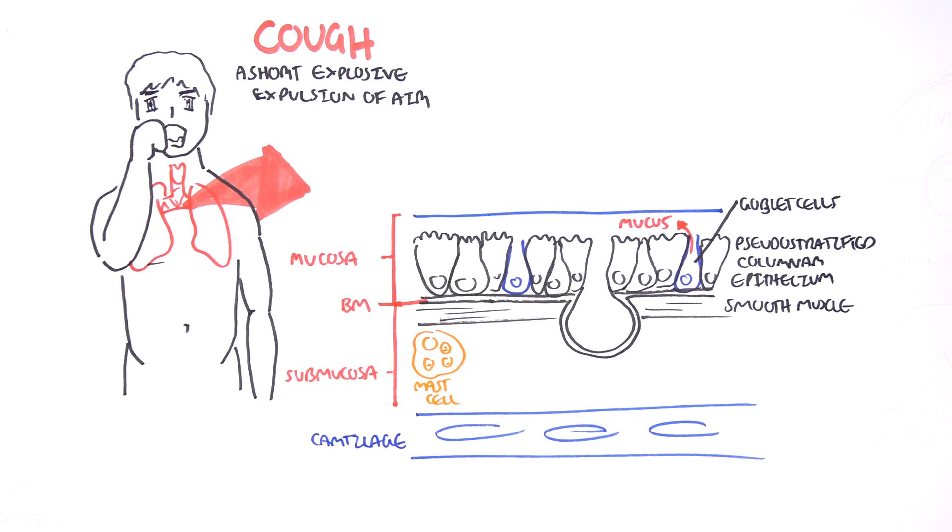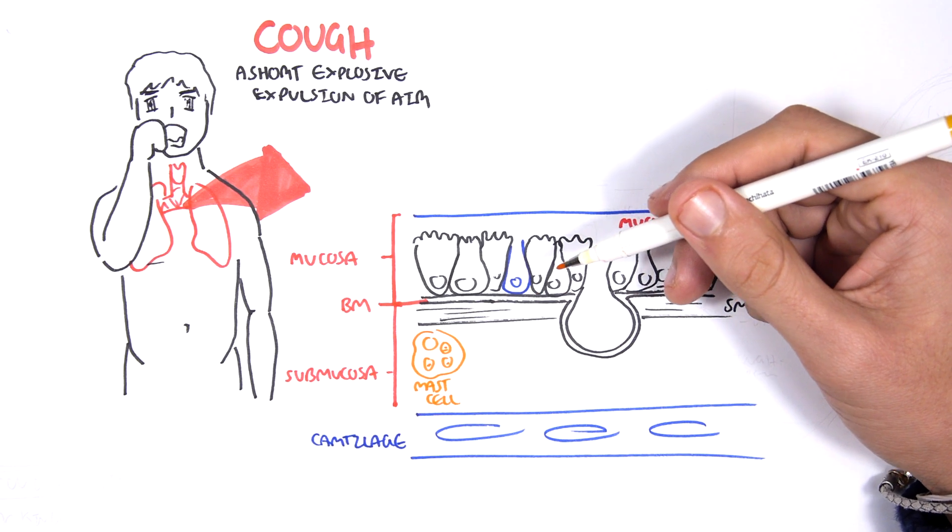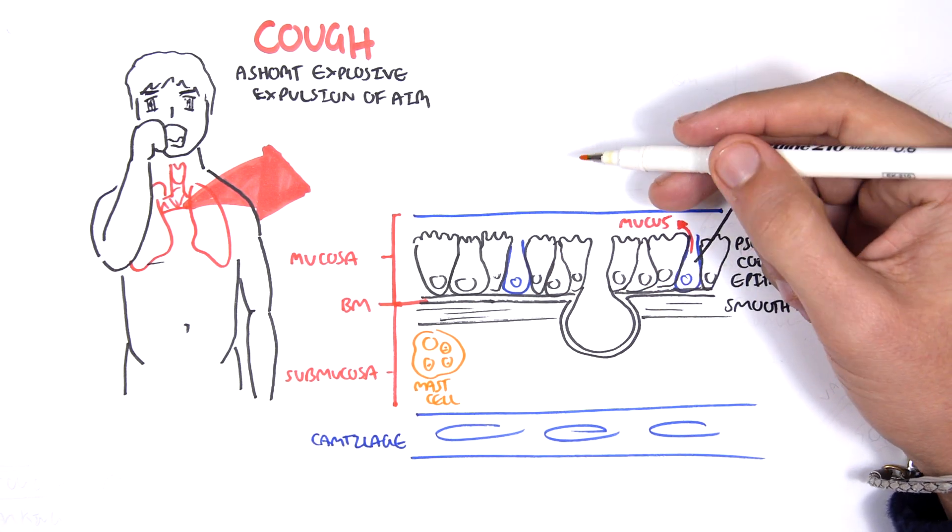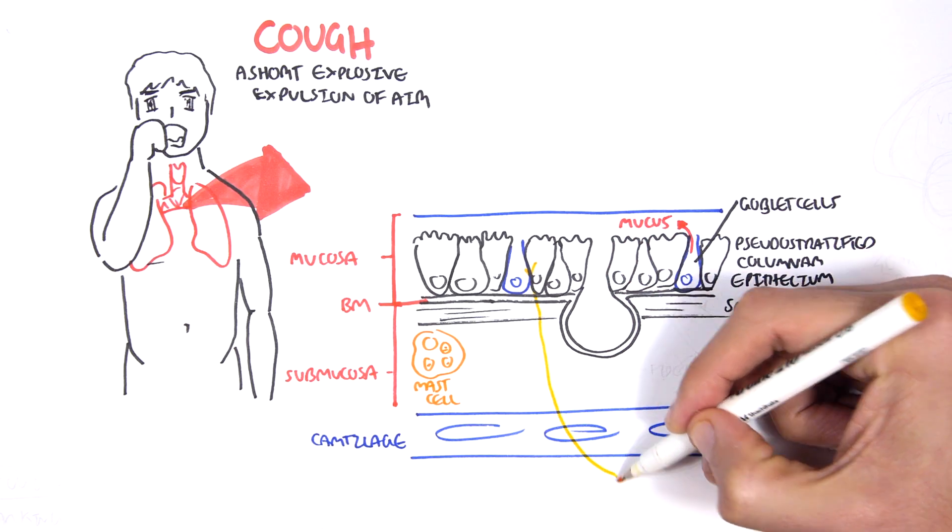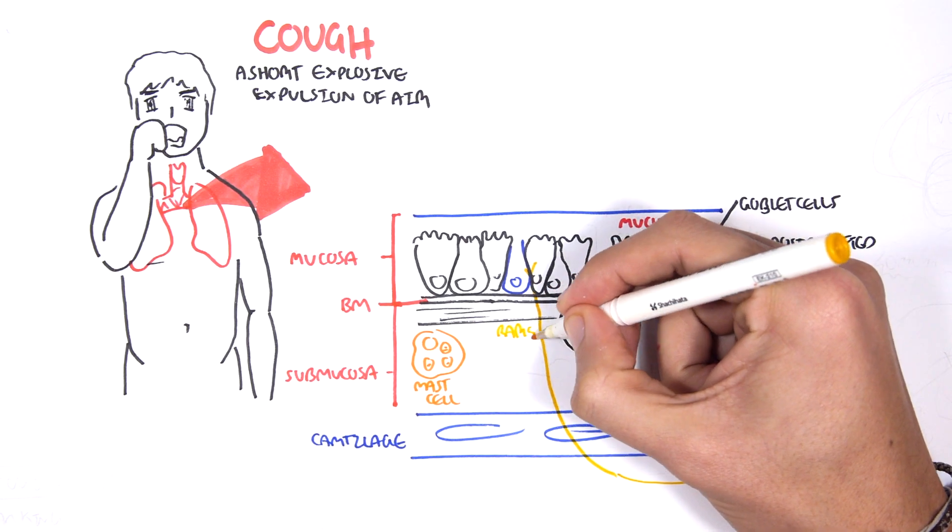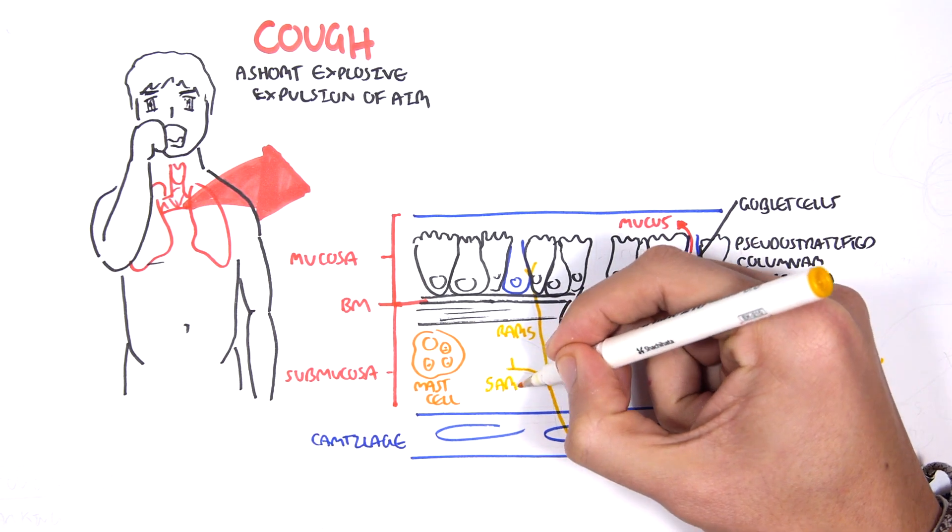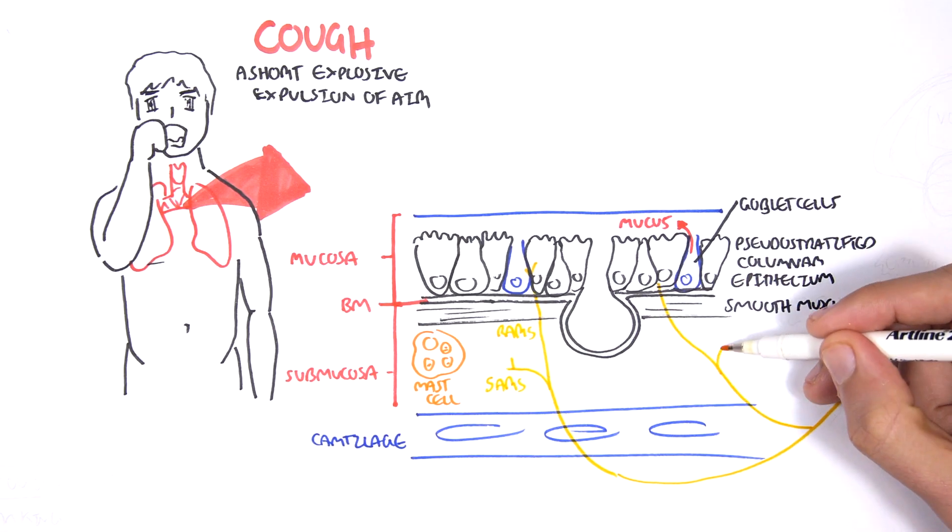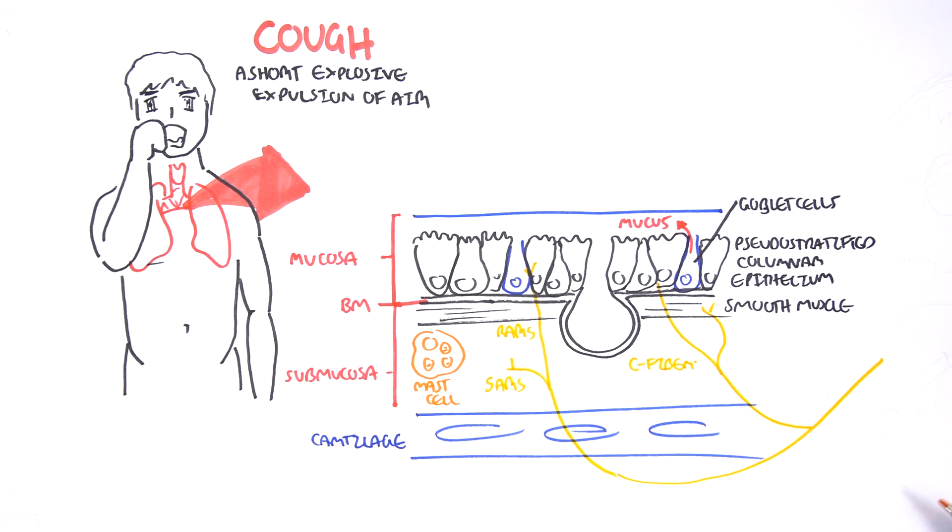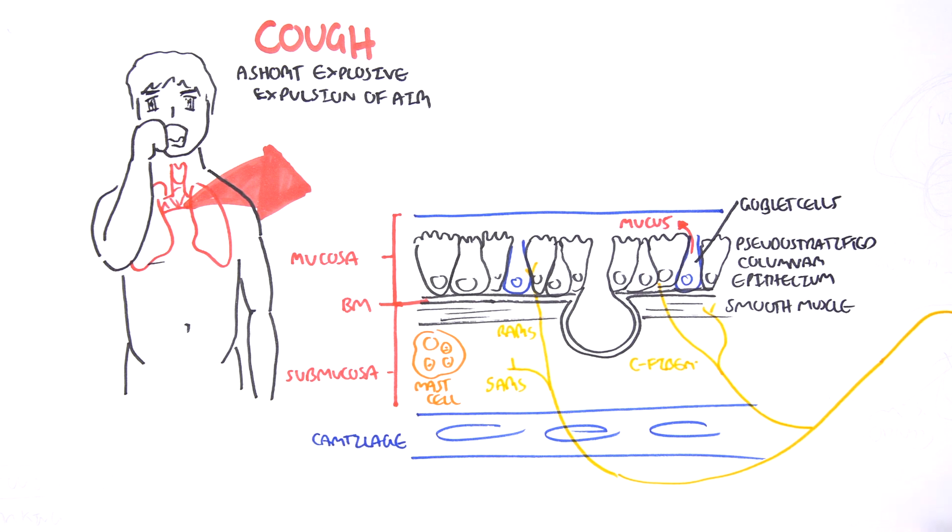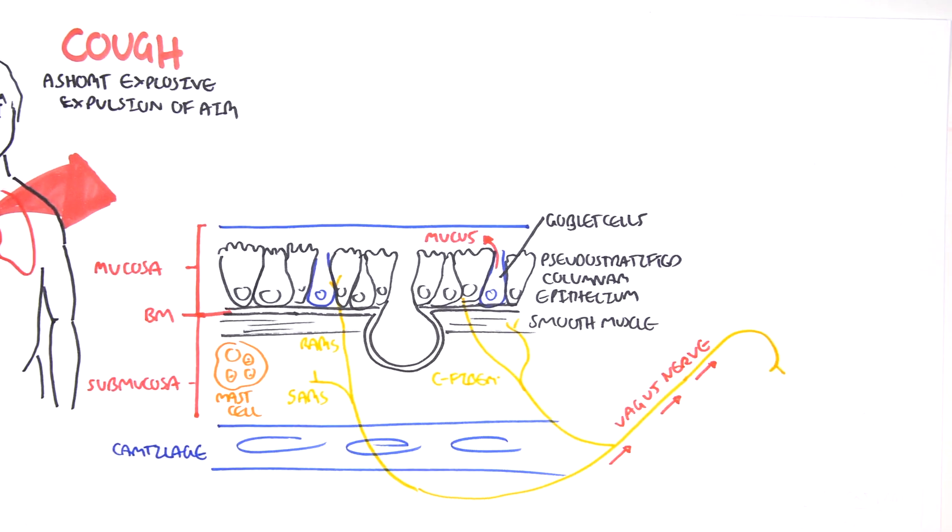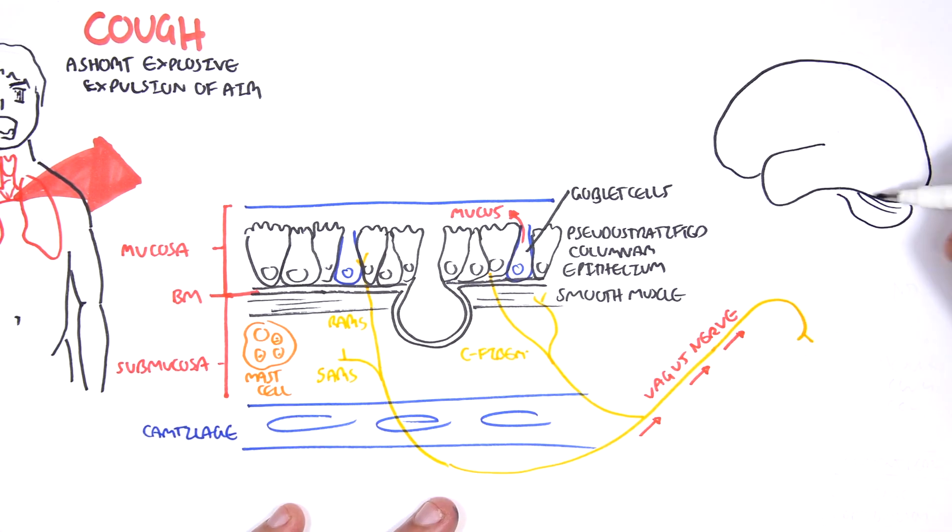There are many nerves that innervate the area. There are sensory nerve fibers, which include RARs, SARs, and C fibers. RARs are rapidly adapting, SARs are slowly adapting, and these are mechanoreceptors. All these nerve fibers are part of the vagus nerve, and it brings the sensory information from the area towards the medulla, which is part of the central nervous system.